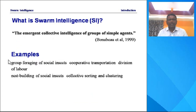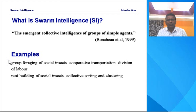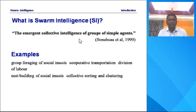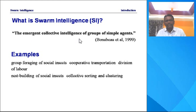What is Swarm Intelligence? The scientist named Bonabeau, in 1999, stated that the emergent collective intelligence of groups of simple agents is nothing but Swarm Intelligence. The emergent collective intelligence of a group of simple agents is Swarm Intelligence.